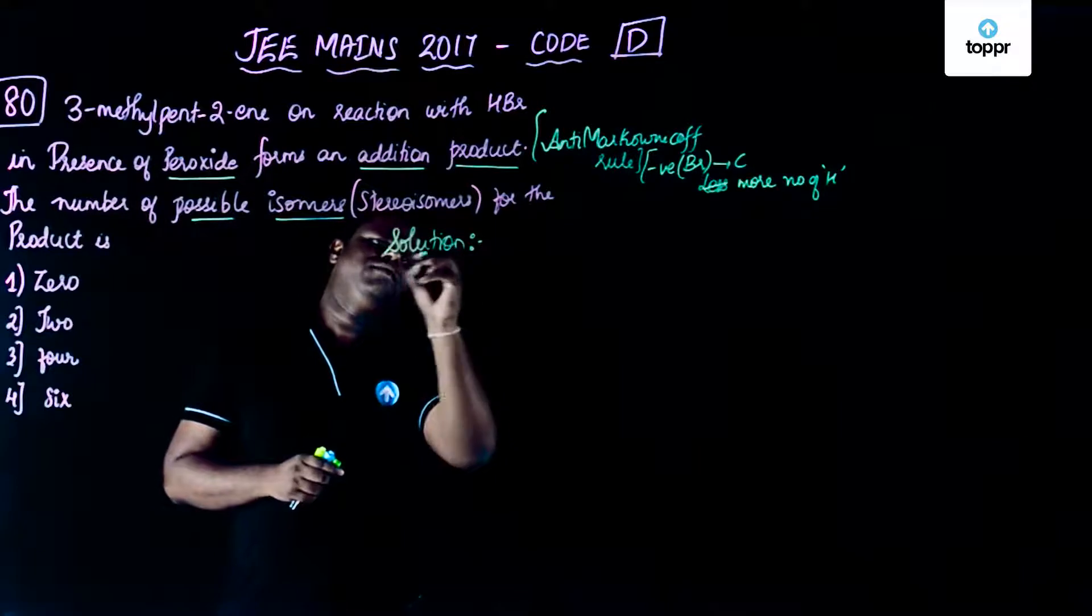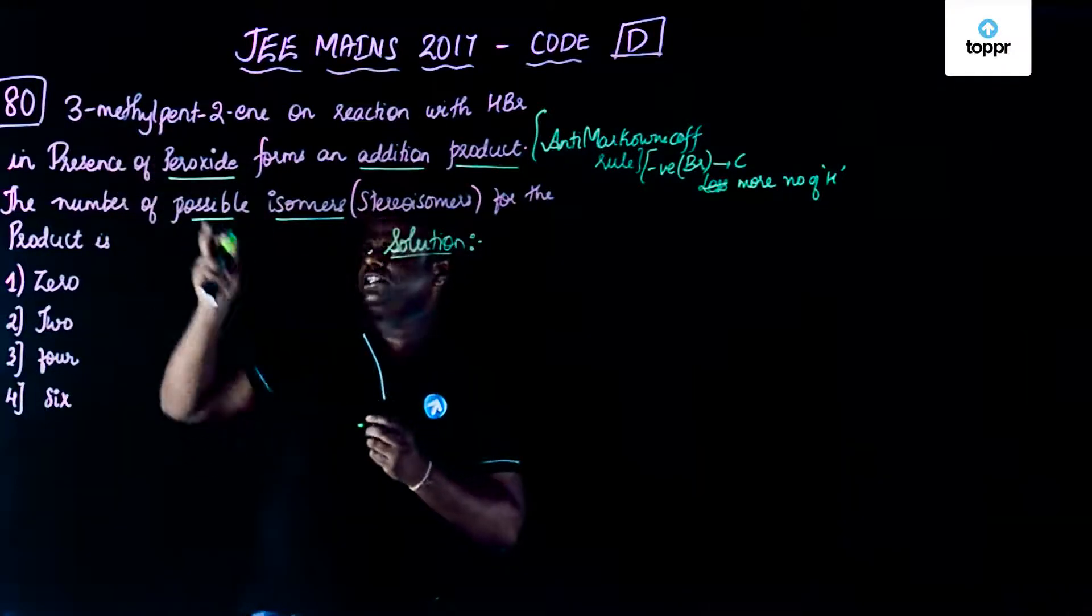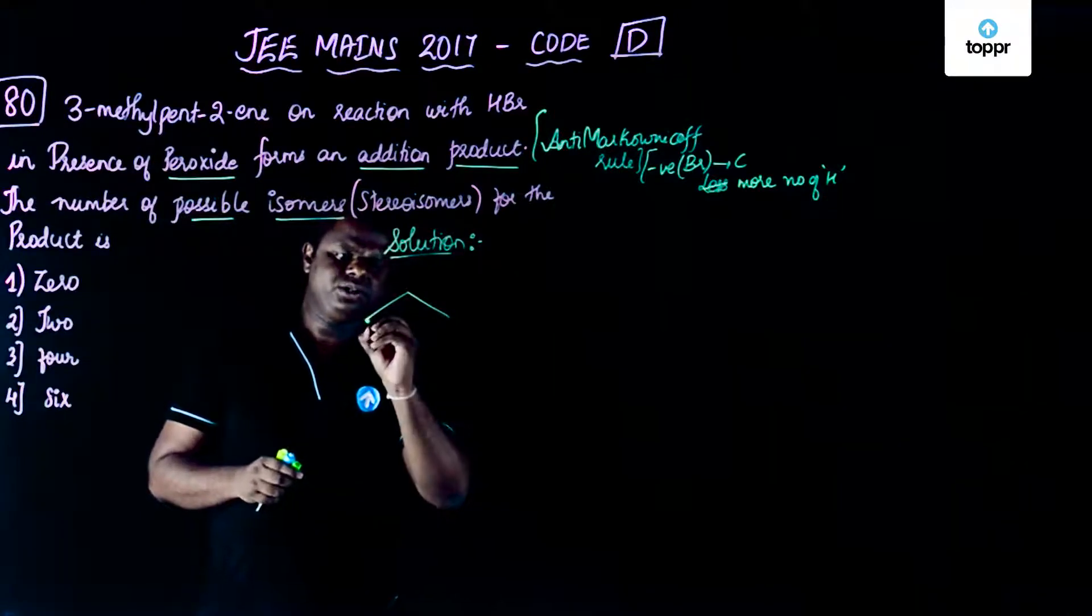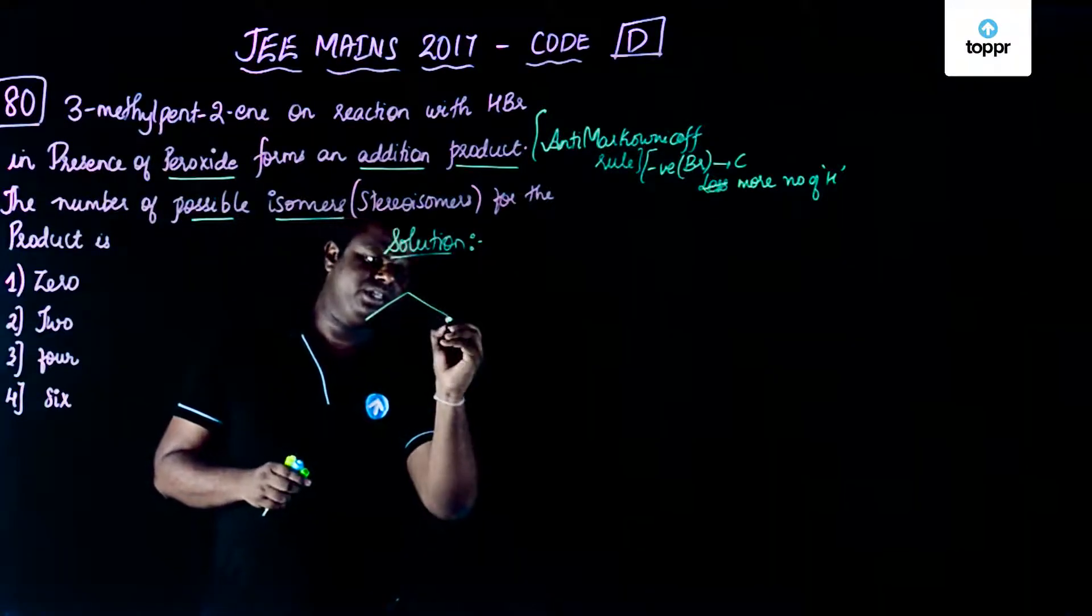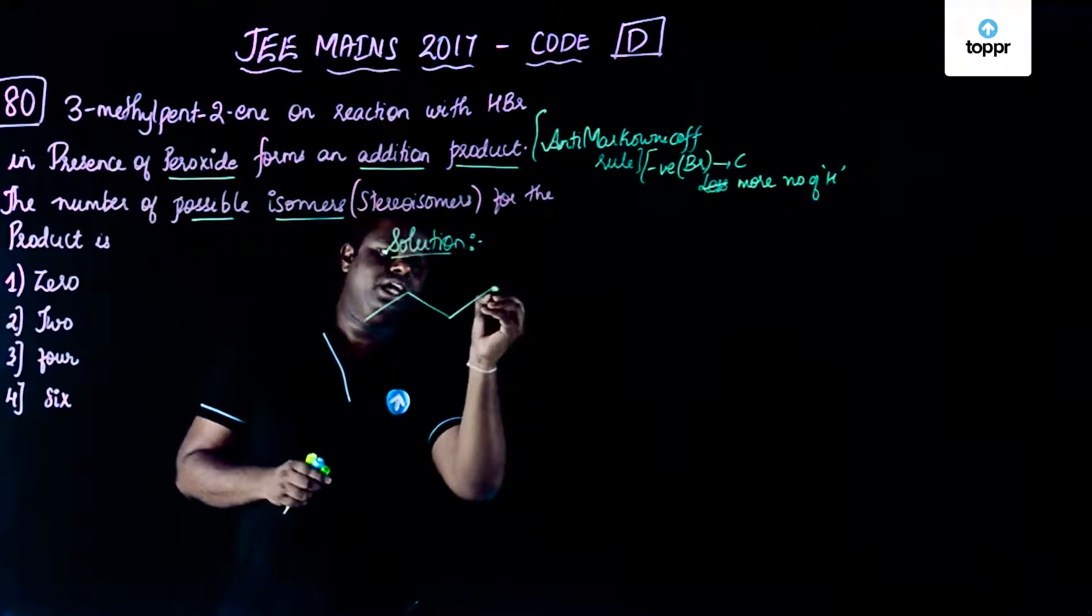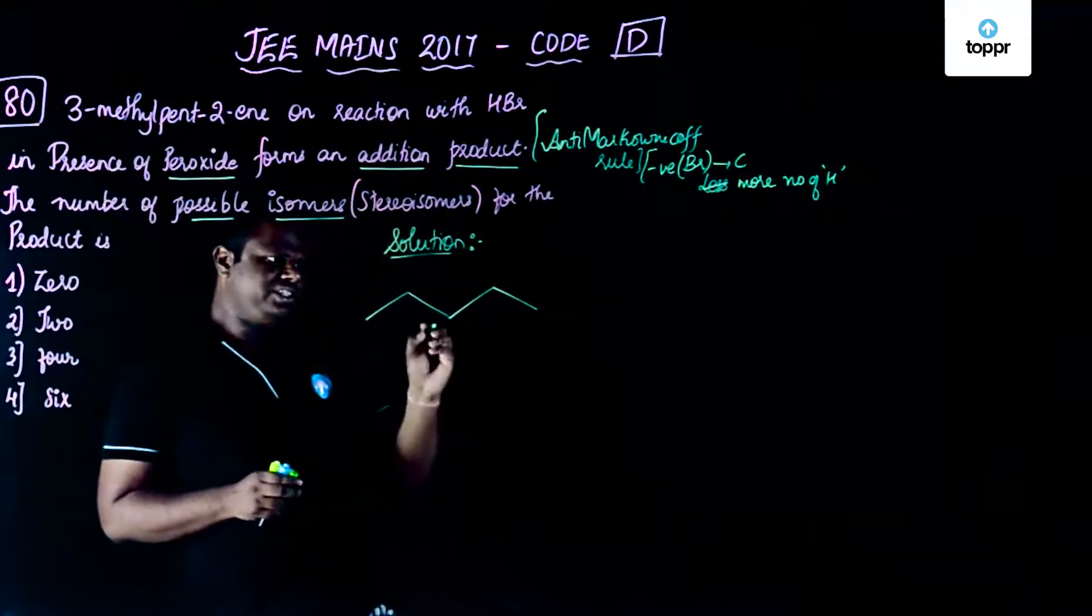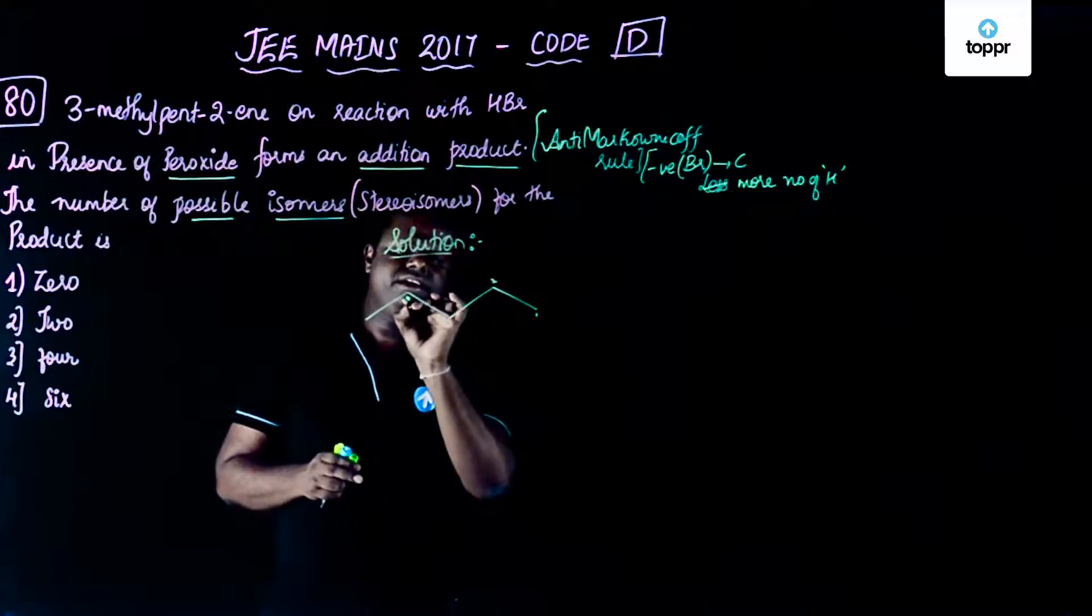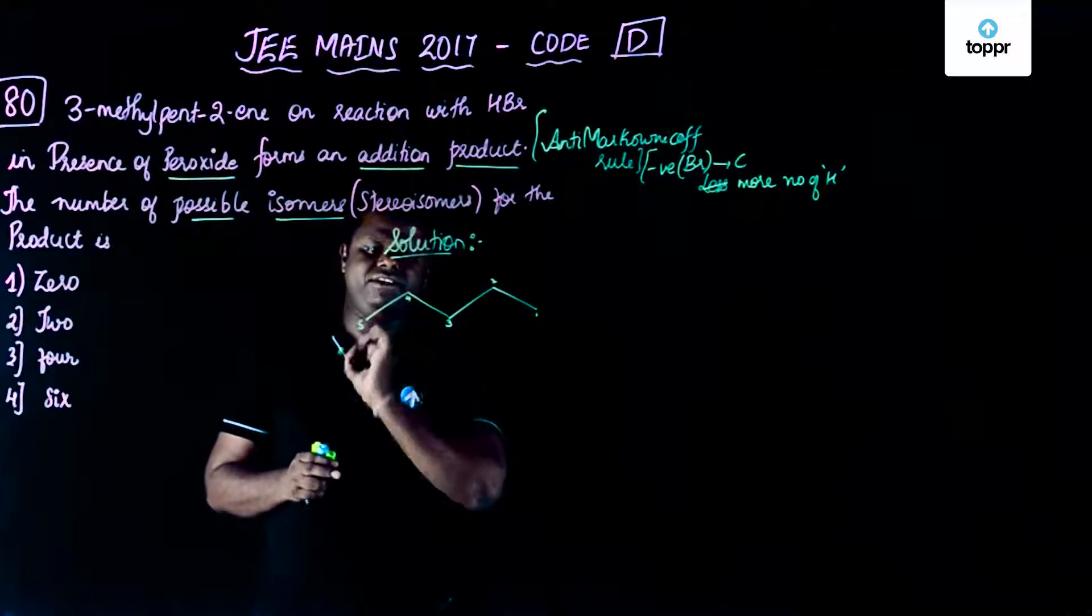So now let's begin with the reactant which is 3-methylpent-2-ene. So I'm going to use the bond line structure. So this is number 1, this is number 2, this is number 3, this is number 4, this is number 5. So let's start with the numbering. So you have 1, you have 2, you have 3, here you have 4 here and you have 5 here.